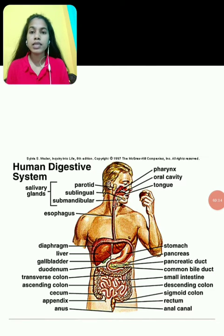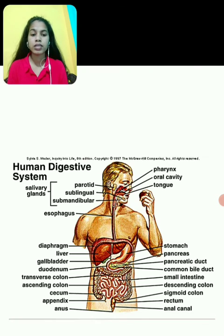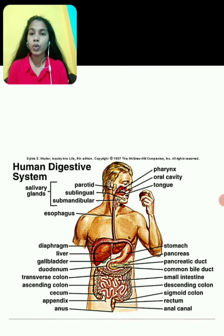The buccal cavity is a large space that consists of the palate, tongue, and teeth. Next comes the pharynx, then the esophagus, the small intestine, the large intestine, and other parts of the human digestive system, which all play a vital role in the digestion of food.